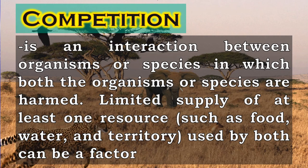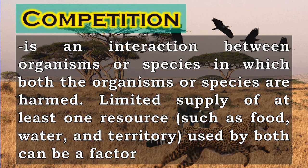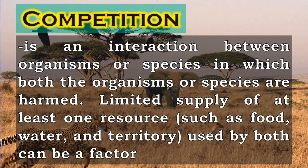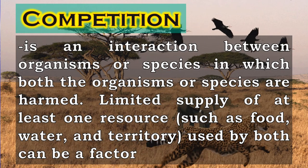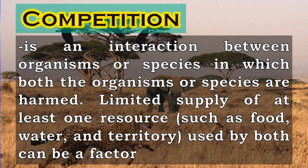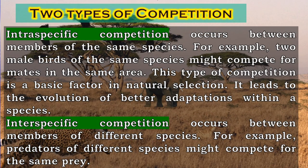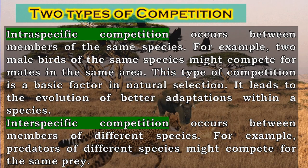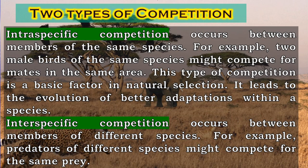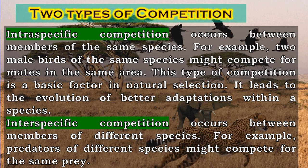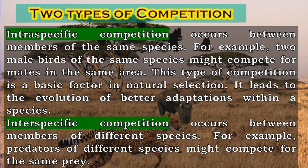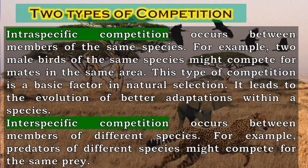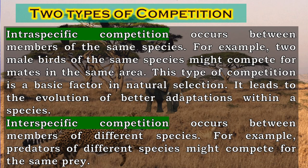Competition is an interaction between organisms or species in which both organisms or species are harmed. A limited supply of at least one resource used by both can be a factor. There are two types of competition: intraspecific competition and interspecific competition. Intraspecific competition occurs between members of the same species. For example, two male birds of the same species might compete for mates in the same area. This type of competition is a basic factor in natural selection.